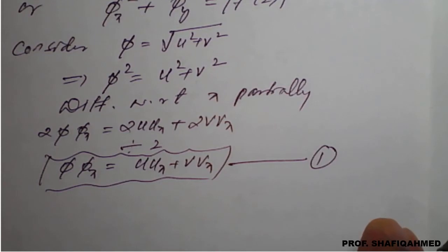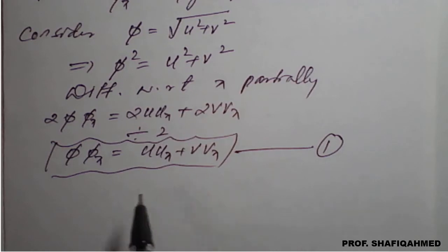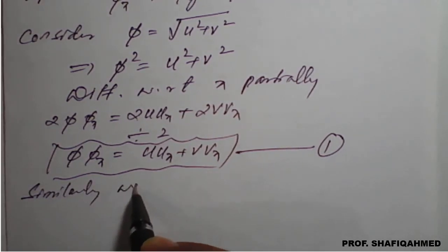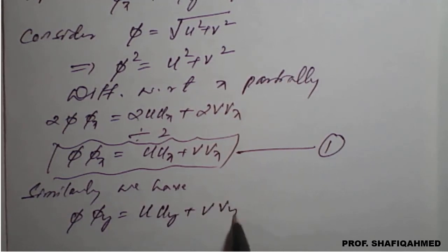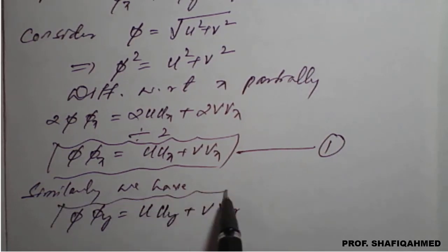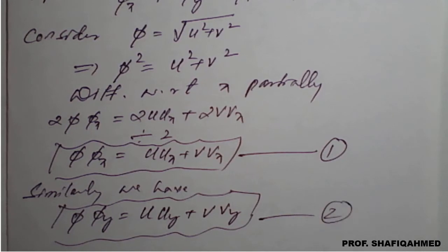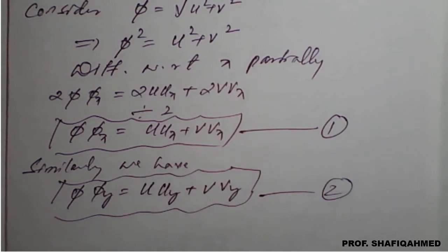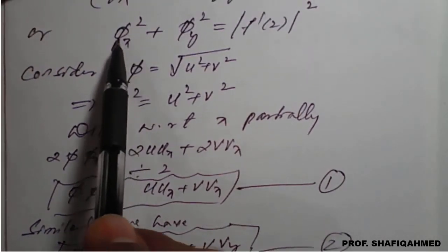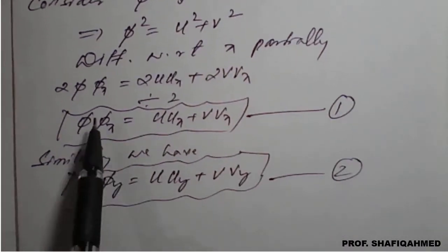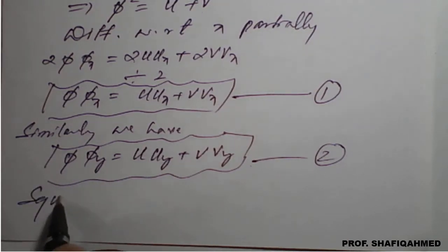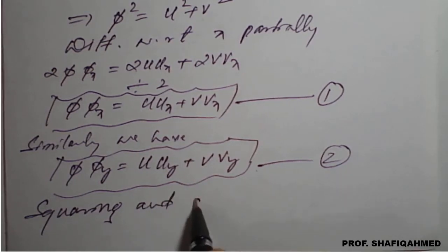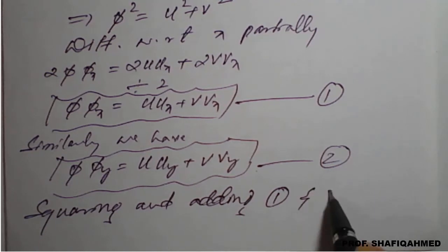Since the function is symmetric, similarly differentiating partially with respect to y gives φ·φy = u·uy + v·vy. This is equation (2). Now, to obtain φx² + φy², we need to square and add equations (1) and (2).